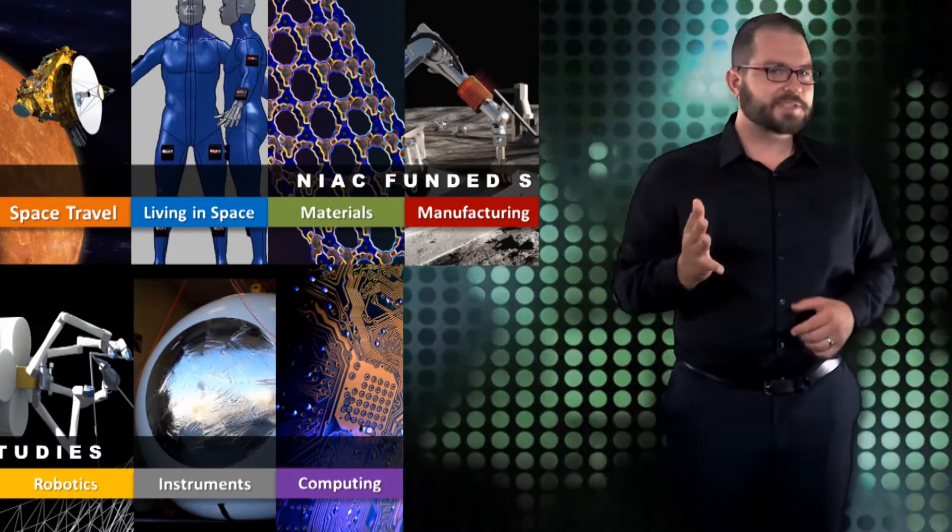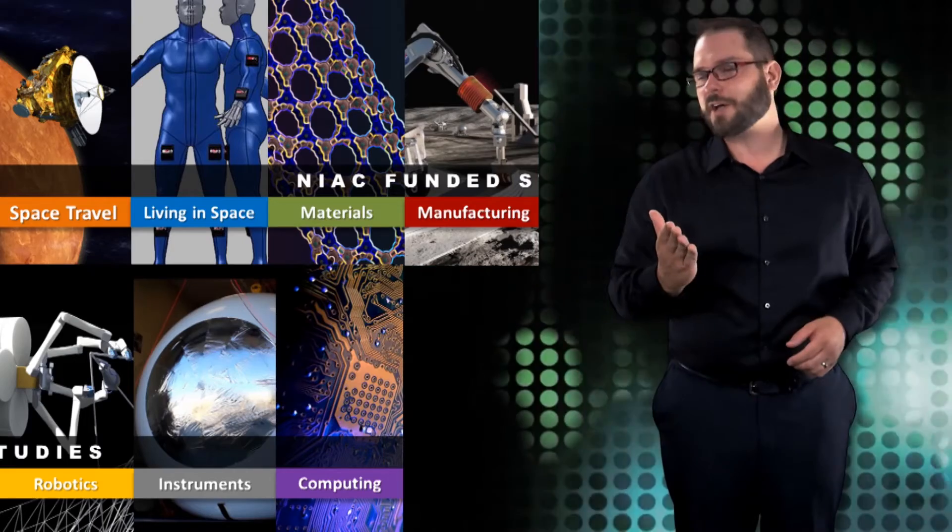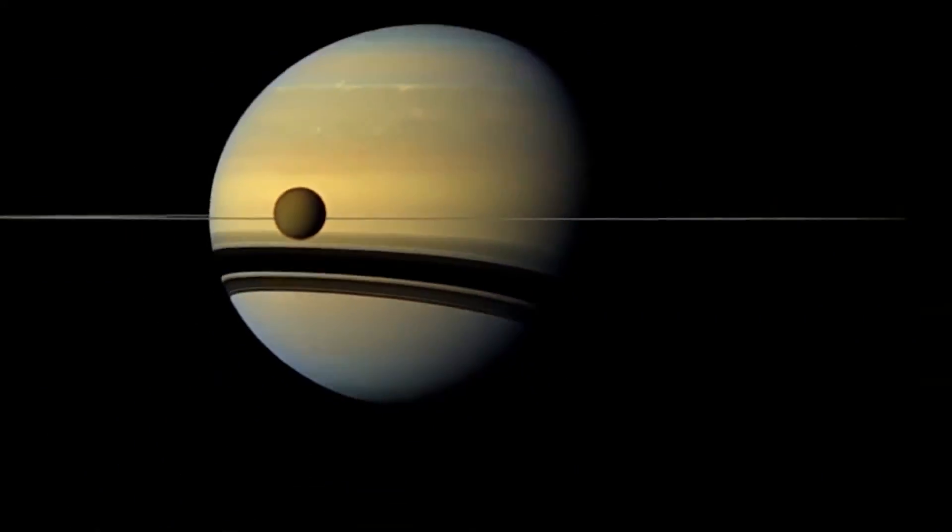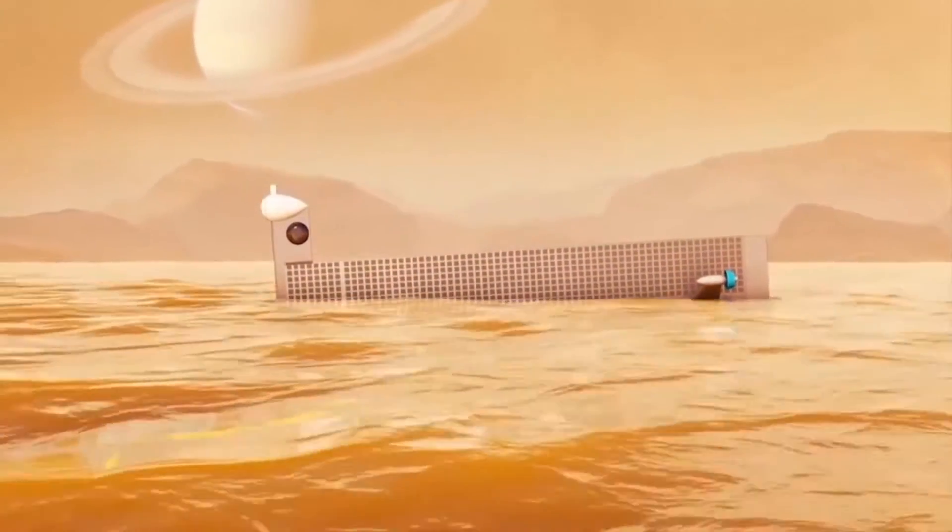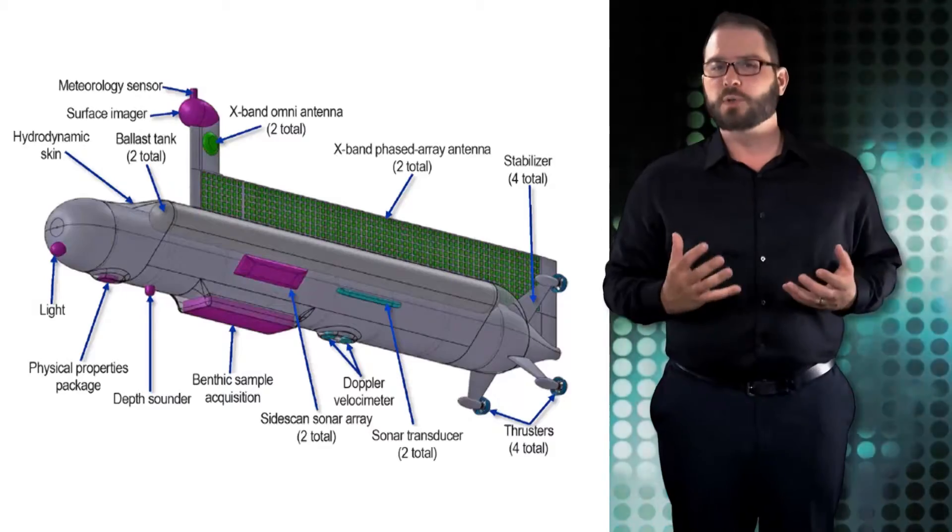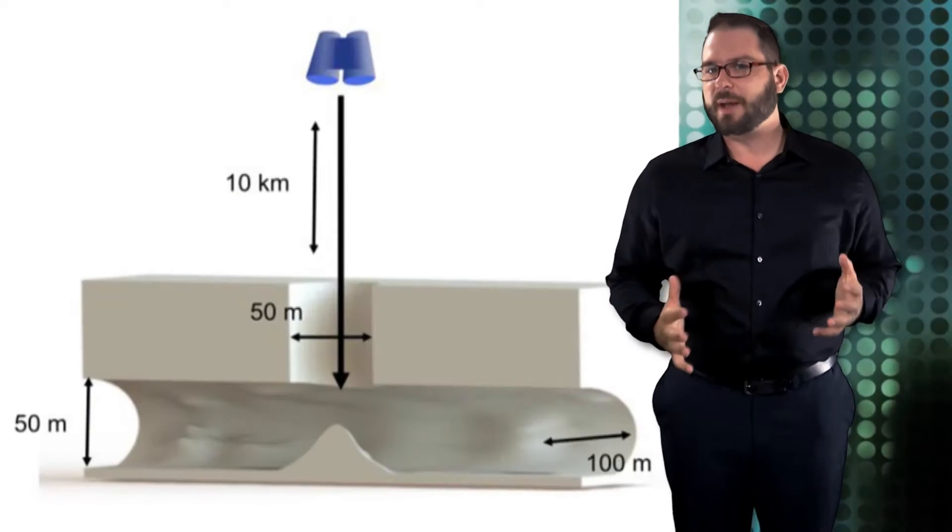And man, did NASA pick some crazy ideas to usher us into the final frontier. The Titan submarine is an interstellar sub that would travel to Saturn's moon and explore the Kraken Mare, the moon's largest body of liquid.